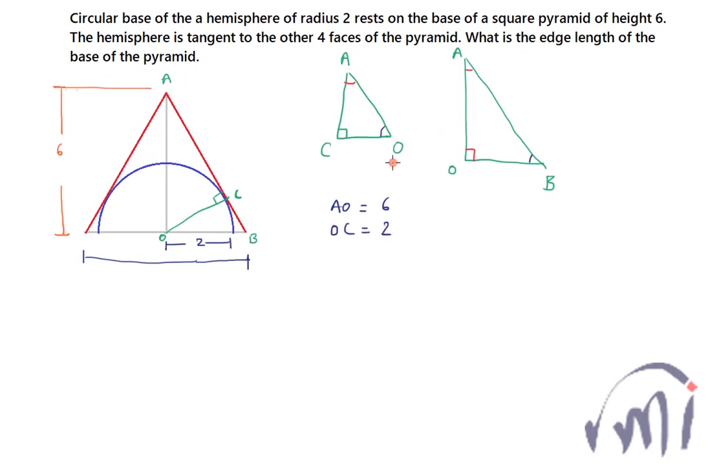Now if we see these two similar triangles, then AC by AO, the ratio of respective sides will be same, that means AC by AO will be OC by BO. Right, here we know AO is 6, OC is 2, AO over here is also 6, and rest of the sides we don't know.